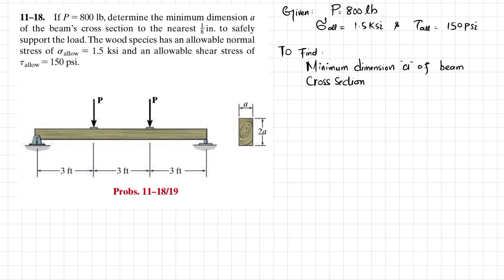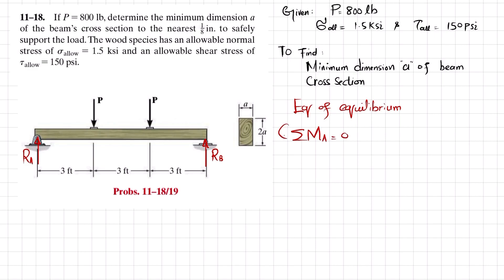First, remove the supports at the ends and replace them with reaction forces: Ra and Rb. Using equations of equilibrium, we can find Ra and Rb. The first equilibrium condition is that the sum of all moments about point A is equal to zero, taking counterclockwise moment as positive.